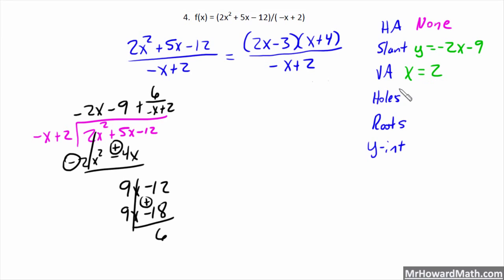So, vertical asymptote at x equals 2. Don't let this negative fool you. You can either add x to both sides and get x equals 2 or subtract 2 from both sides and then divide by negative 1. Either way, you get x equals 2. Holes occur from factors that cancel between numerator and denominator. So, we have none because no factors match between the numerator and denominator.